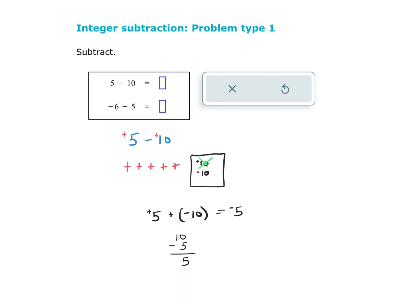Let's look at another one. We have negative 6 minus 5, and the 5 is positive. So we're going to draw 6 negatives: 1, 2, 3, 4, 5, 6. We're going to take away 5 positives. I don't have 5 positives, so I'm going to give myself 5 positives and 5 negatives. Now I can take away the 5 positives. So all together, what I have is 6 negatives plus 5 more negatives, which equals 11 negatives. Once again, subtracting a number means we're really just adding the opposite.